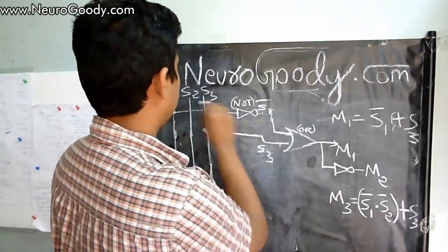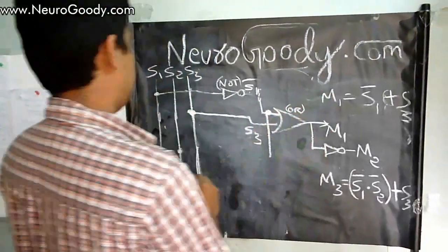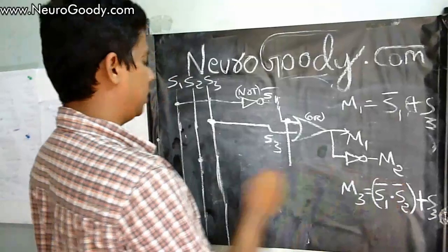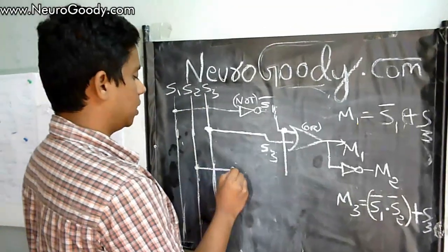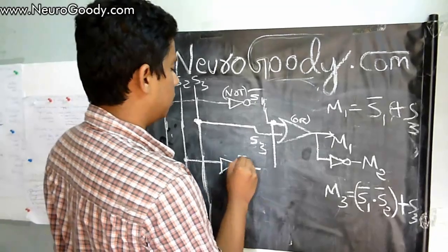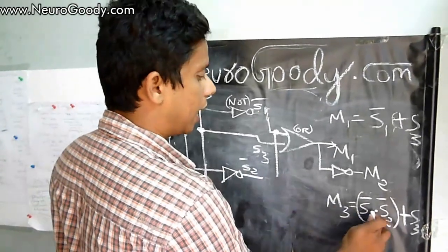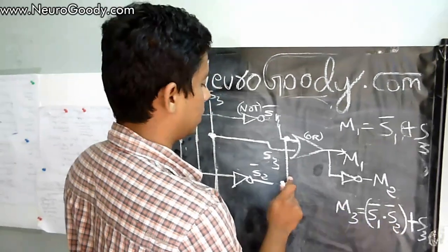We already have S1 bar here, so let's tap a wire from here. We need S2 bar, so I have S2 here and I have to make it S2 bar by putting a NOT gate here, so I have got S2 bar here.